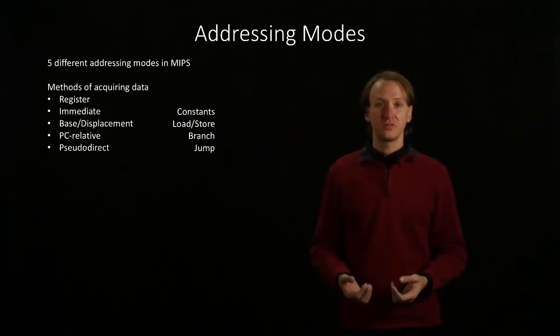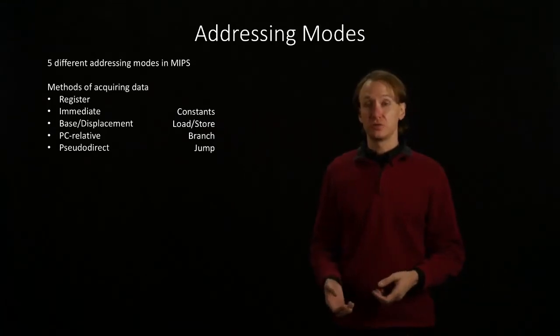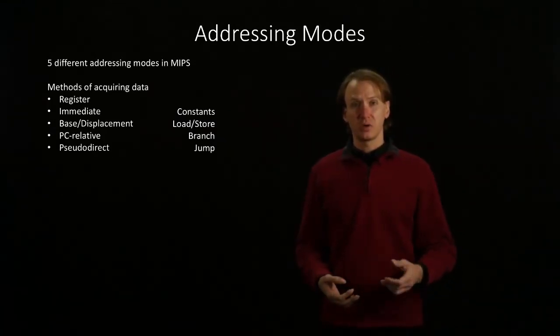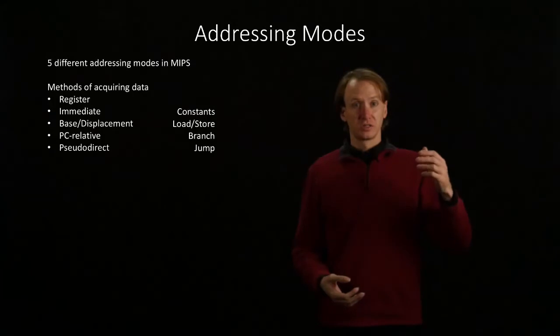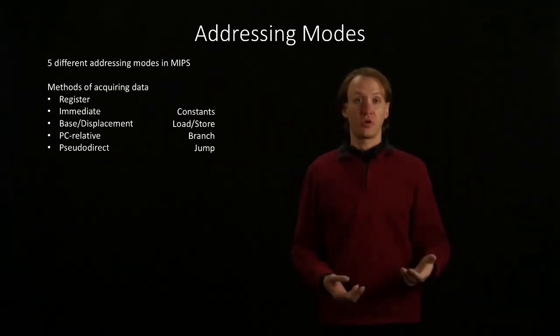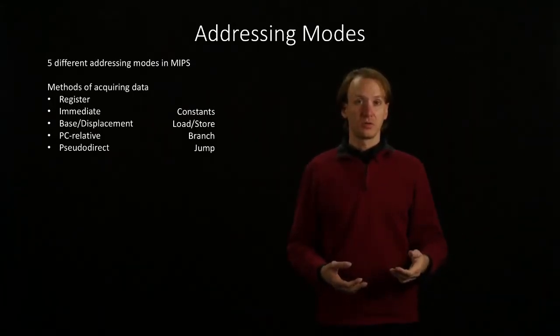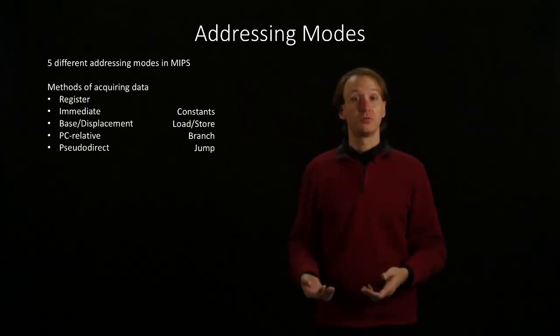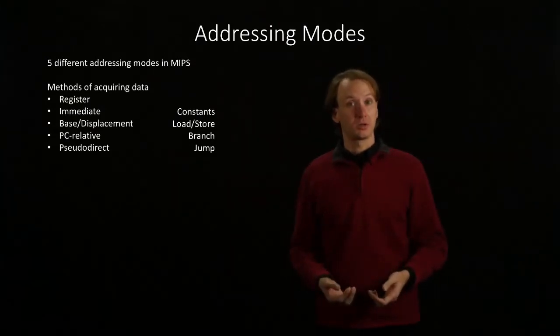PC relative addressing is used by the branch instructions because they always jump some number of instructions before or after the current program counter. So the resulting address is relative to the program counter.